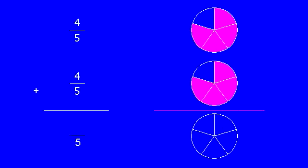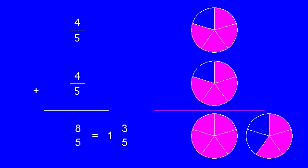So here we're adding fifths, and we have eight of them. So we have more than it takes to make a whole, so we use what we know about simplifying fractions. It takes five to make a whole, so five of them give us a whole. We have three left over, and the size of those pieces are fifths.